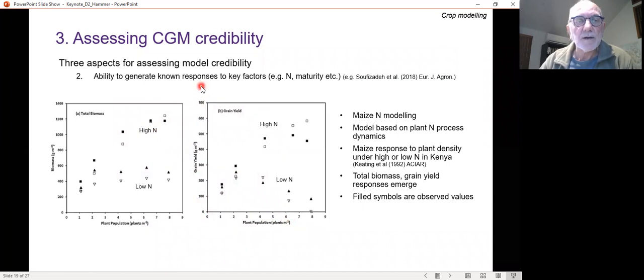The second point about assessing credibility was to generate known responses to factors. And so we've got a nitrogen by plant population experiment in maize. And if we look at the second panel that's yield, under high nitrogen, and this is irrigated under high nitrogen, you've got increased response and yield to population, whereas under low nitrogen, you tend to crash out. And this is what you would expect. So the filled symbols are the observed values, the open symbols are the simulations, and similarly for biomass and yield, you get the expected result of that response from the model, which gives you some confidence in its credibility.